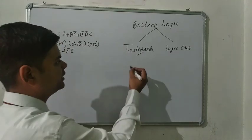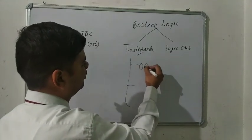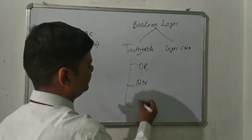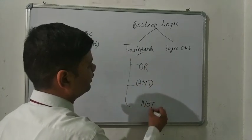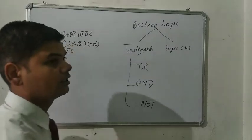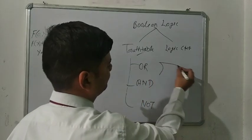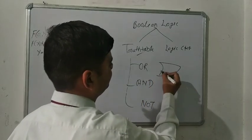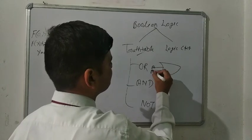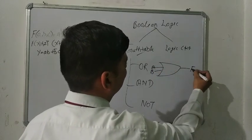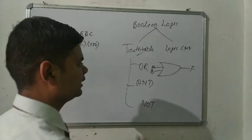Basically we are using three logic gates. First is the OR, second is the AND, and third is the NOT. The symbol of the OR gate is like this. Whenever you are taking two inputs, this is the output. Whenever you are taking the AND gate, the symbol is just like this.